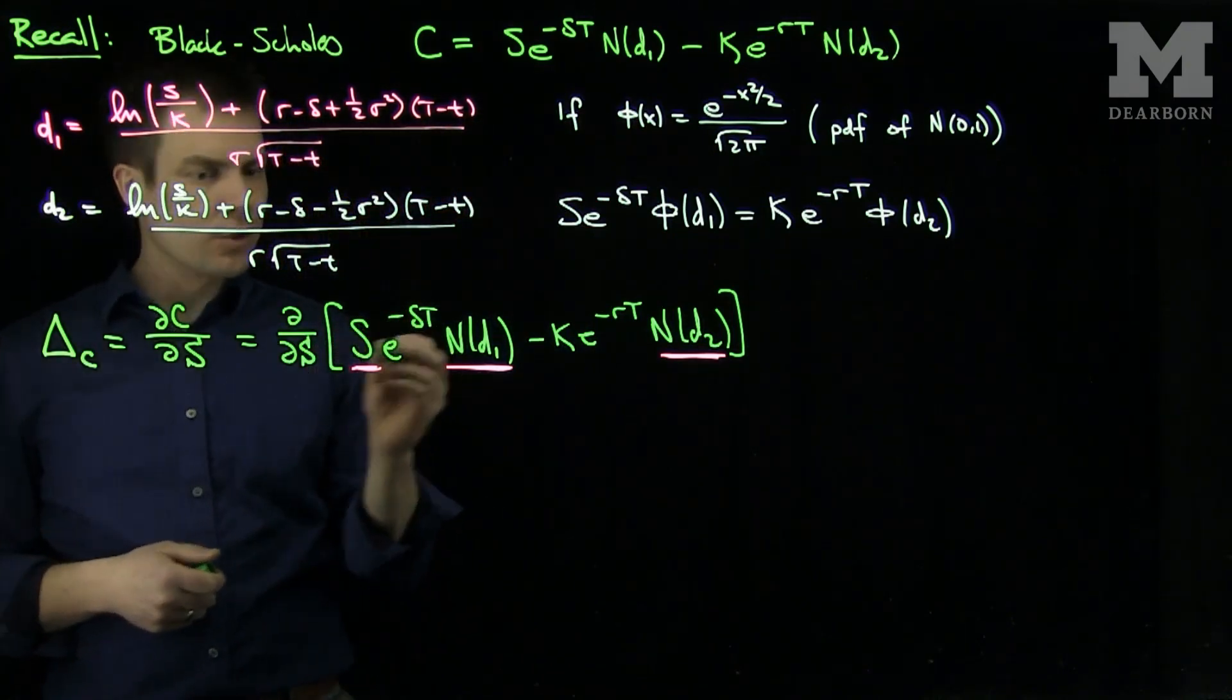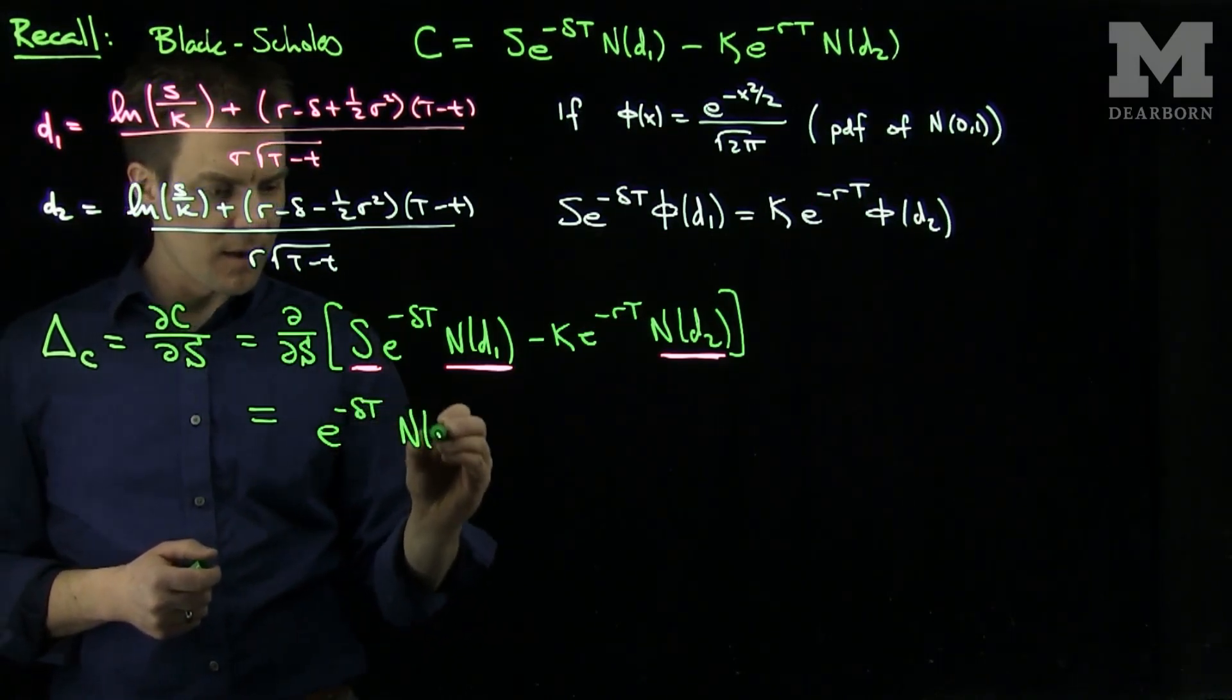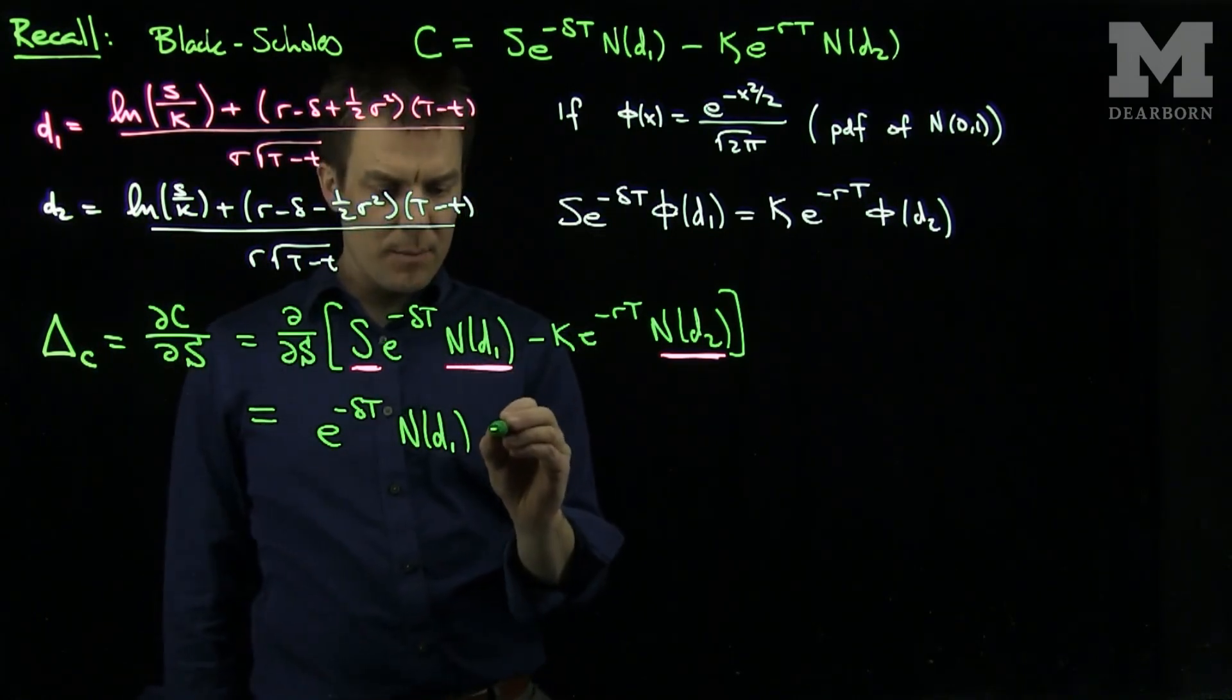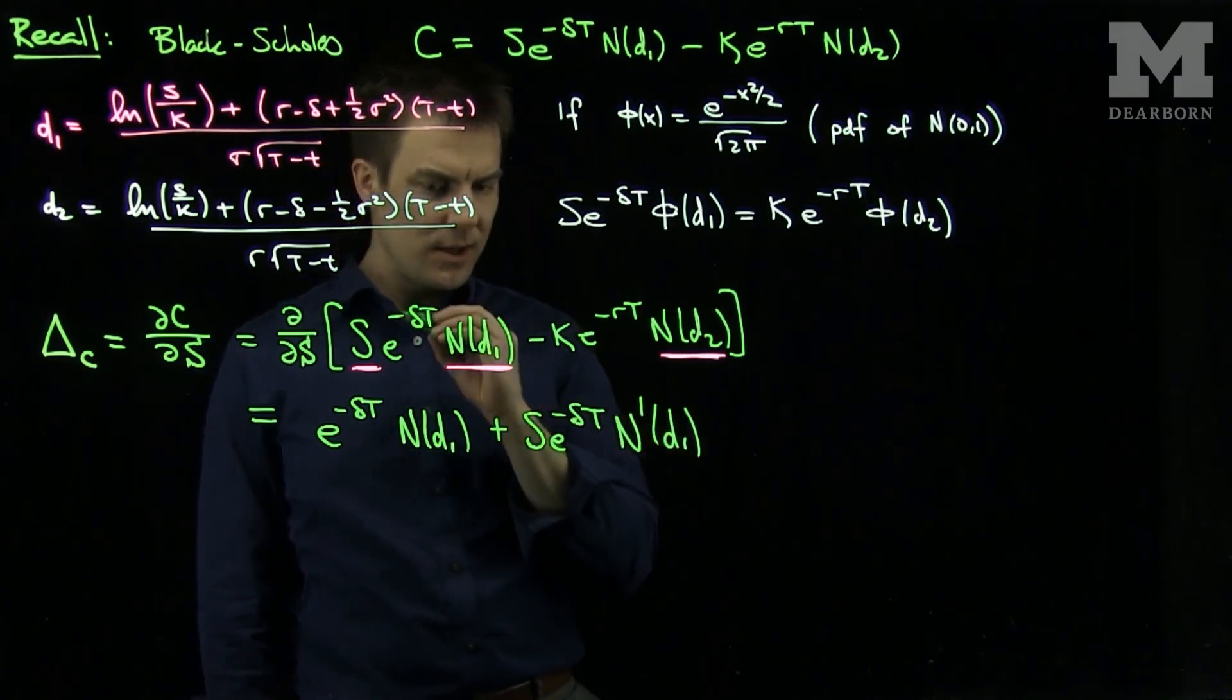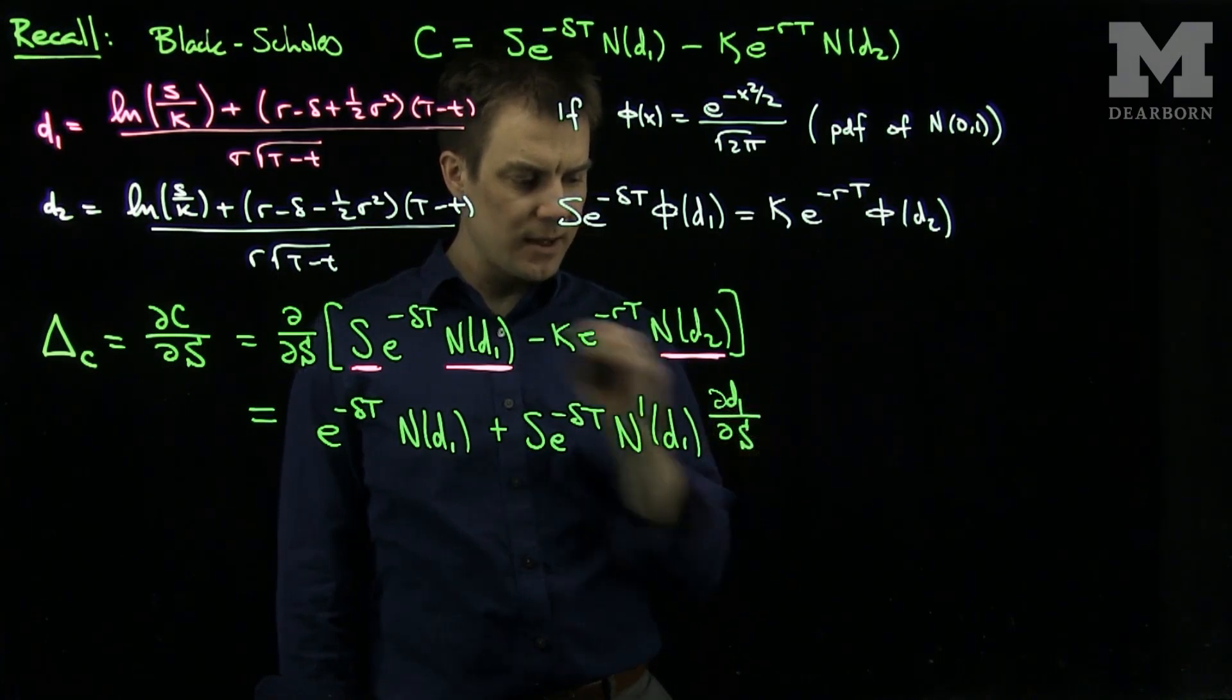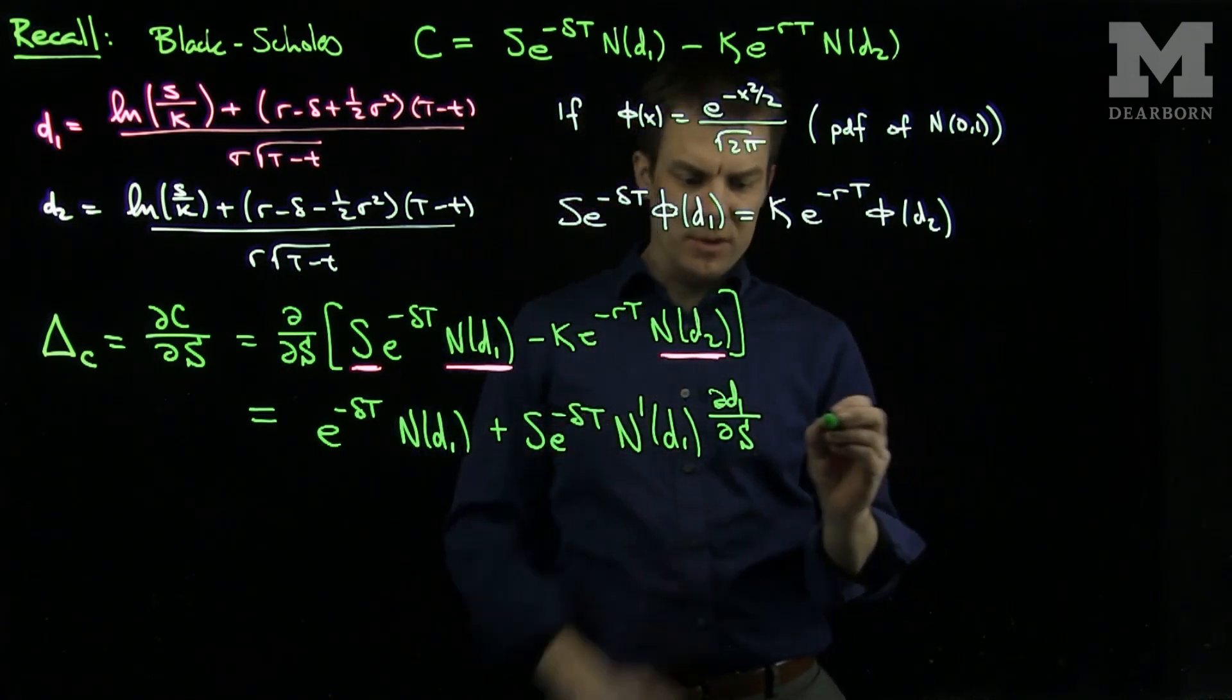So we'll need to do the product rule on the first term. So this will be by the product rule, just e to negative delta t n of d1, and then I'll have a plus s e to negative delta t n prime of d1 times partial of d1 with respect to s by the chain rule. And then those are my product rule terms.